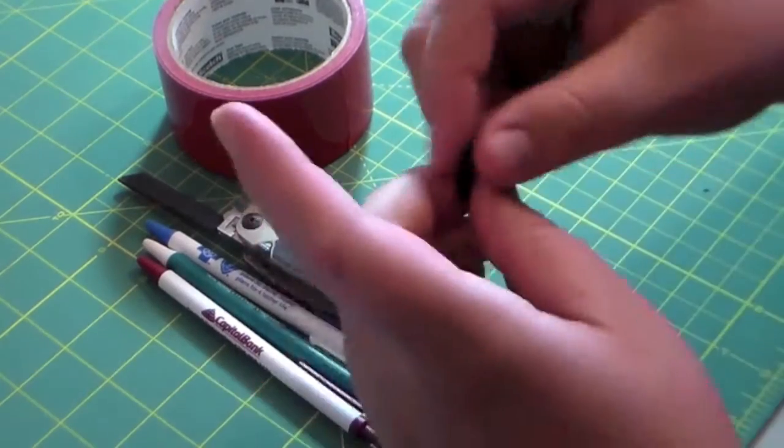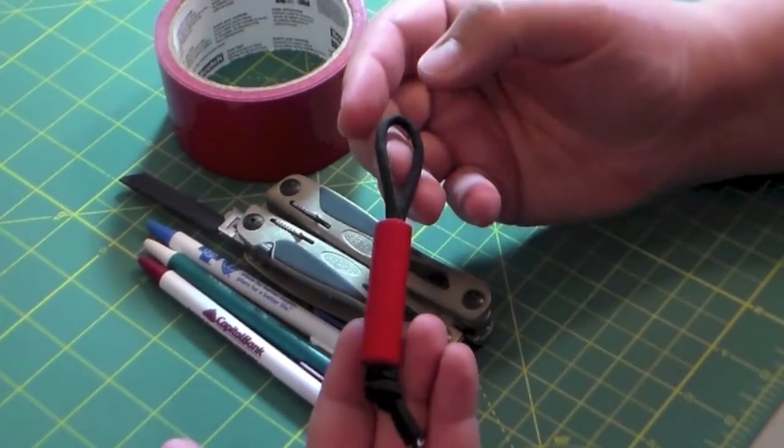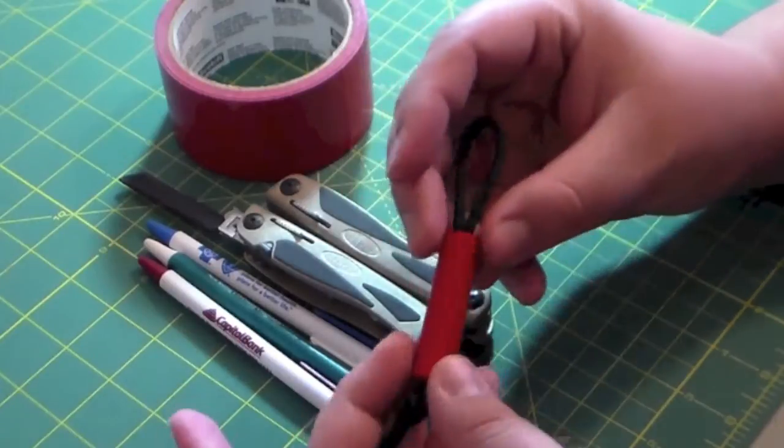And that way you have a simple keychain slash zipper pull with some paracord on it.